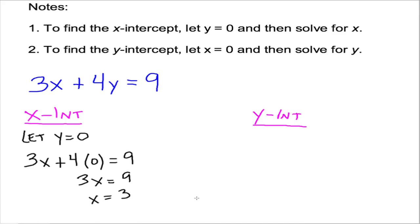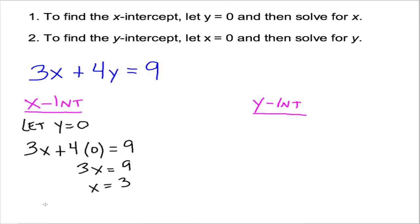Now, intercepts are ordered pairs. So they need to be written as ordered pairs. So the x-intercept would be 3, 0. That is the x-intercept, not just the number 3. That actually means something else that we'll talk about in a later video. So yeah, some books get lazy, some instructors get lazy, whatever the case may be, and say yeah, 3 is the x-intercept. But intercepts are ordered pairs, and they should be written as such.